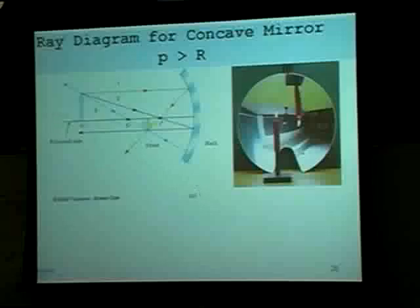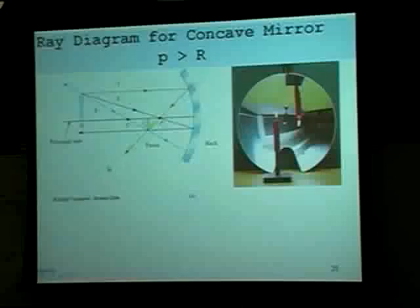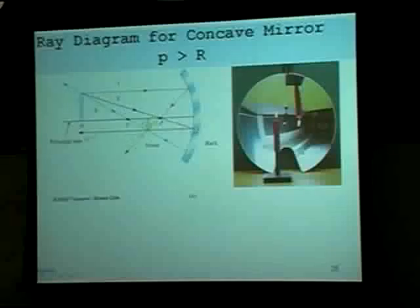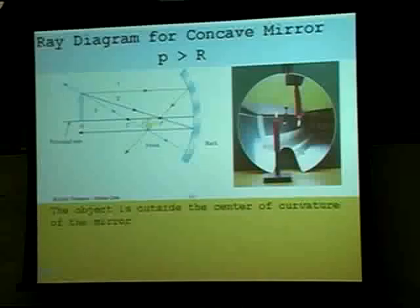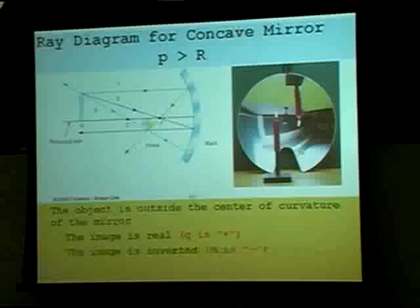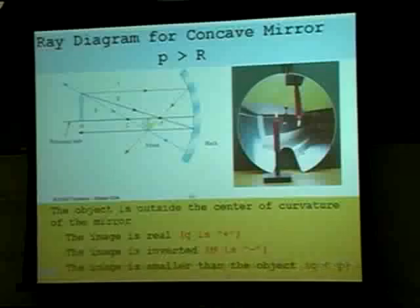For a concave mirror with the object outside the focal point: a ray parallel to the axis reflects through the focal point, one through the center of curvature reflects back, and one through the focal point reflects parallel. Where the three rays converge is where the image tip is — the image is real and inverted. Image distance is positive, magnification is negative and less than one in magnitude — the image is smaller than the object.